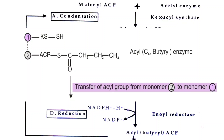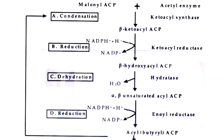This transfer makes the ACP vacant. The second molecule of malonyl-CoA then donates its malonyl unit to the vacant ACP. After binding of the second malonyl unit to ACP, the four reactions — condensation, reduction, dehydration, and second reduction — are repeated, yielding a 6-carbon fatty acid still attached to ACP.